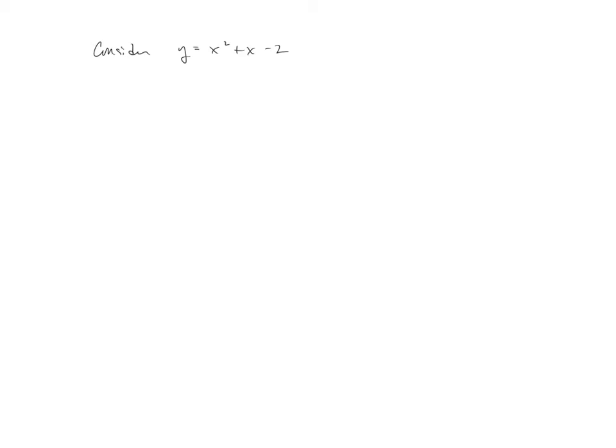So to transition into the Factor Theorem, I want to start by looking at this simple example here. If I tell you to find all real and imaginary zeros, we would go ahead and set it equal to zero.